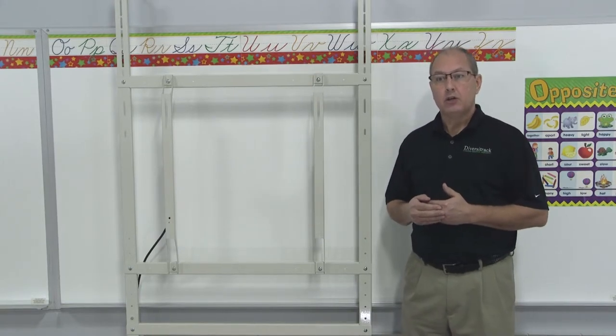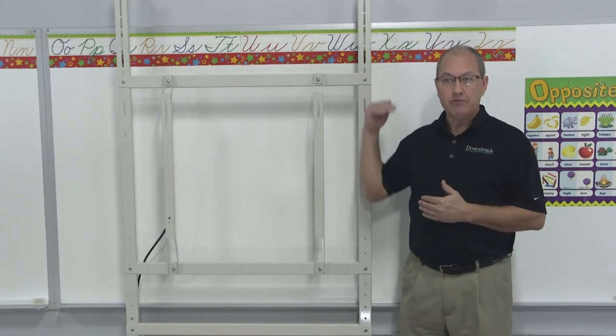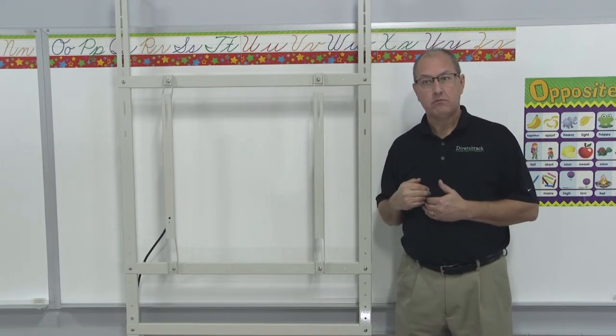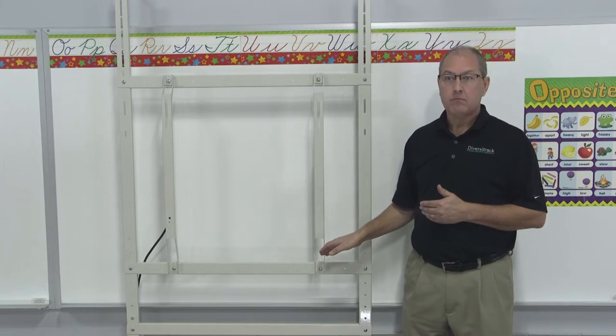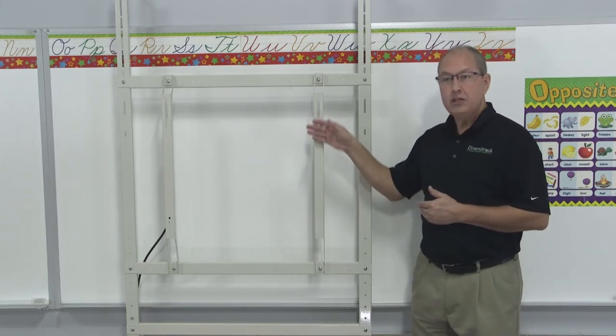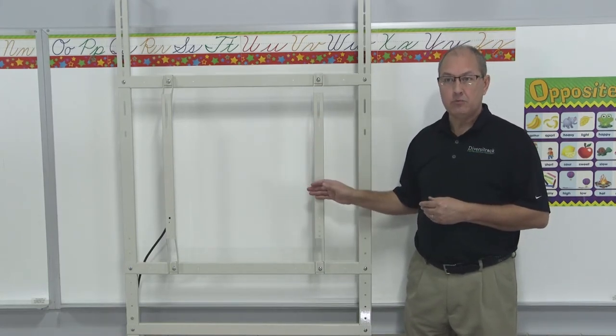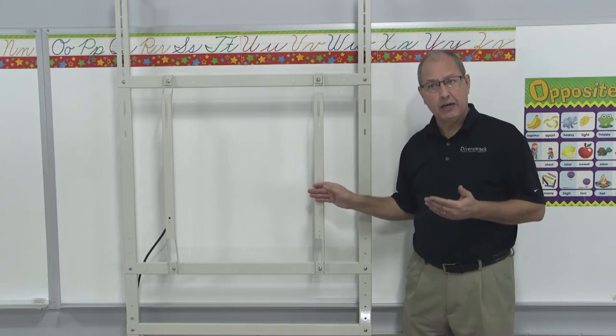Also, our tracks fasten above and below your existing chalk or dry erase board. We clear a standard pen tray. Your TV is vertically adjustable after the track sections are fastened to your wall.